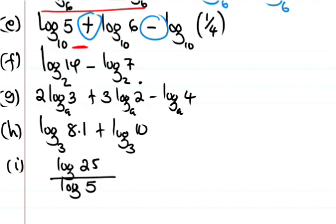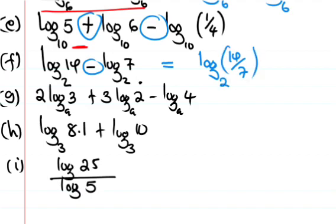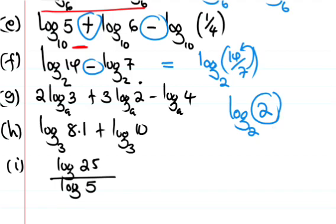Next: log base 2 of 14 minus log base 2 of 7. Since we are subtracting, we divide: 14 divided by 7 equals 2. So we get log base 2 of 2, and since the base equals the number, the answer is 1. You can verify on your calculator: log base 2 of 14 minus log base 2 of 7 also gives 1.